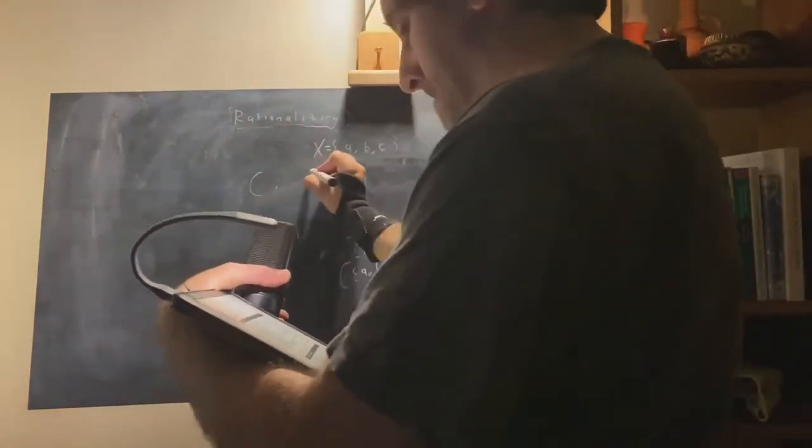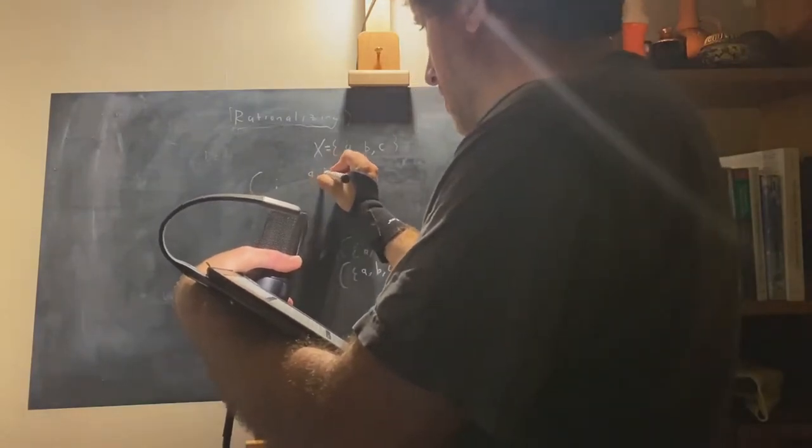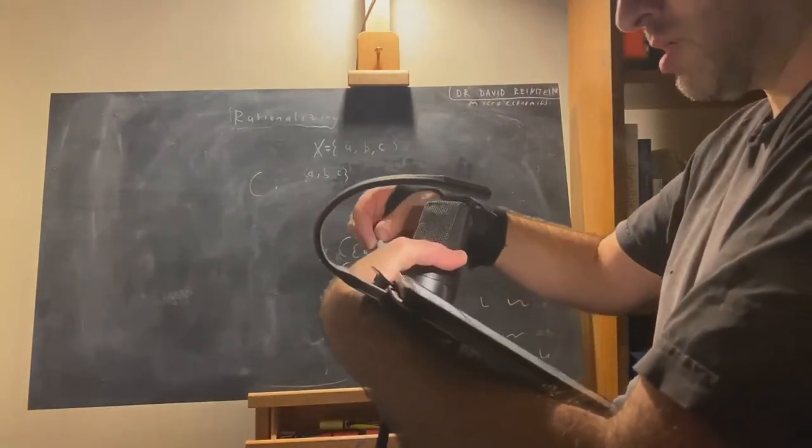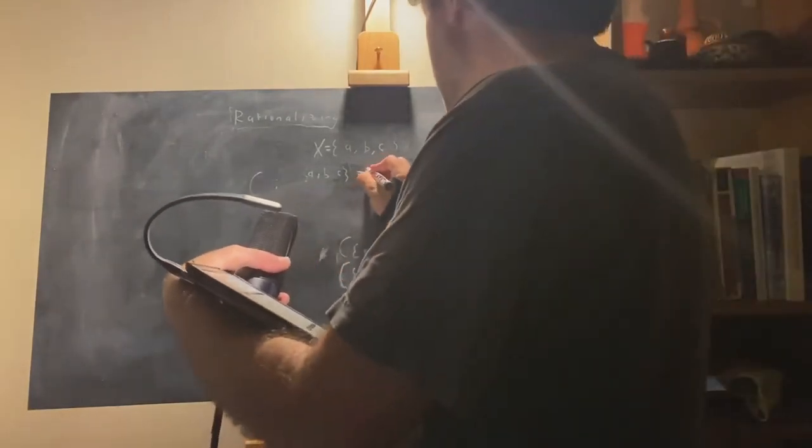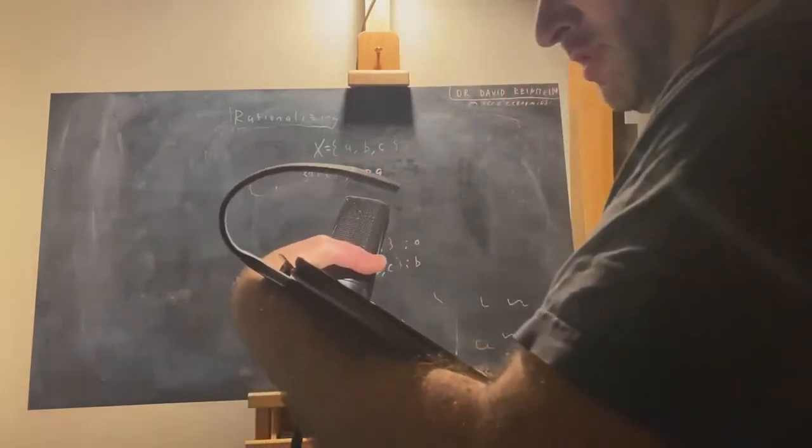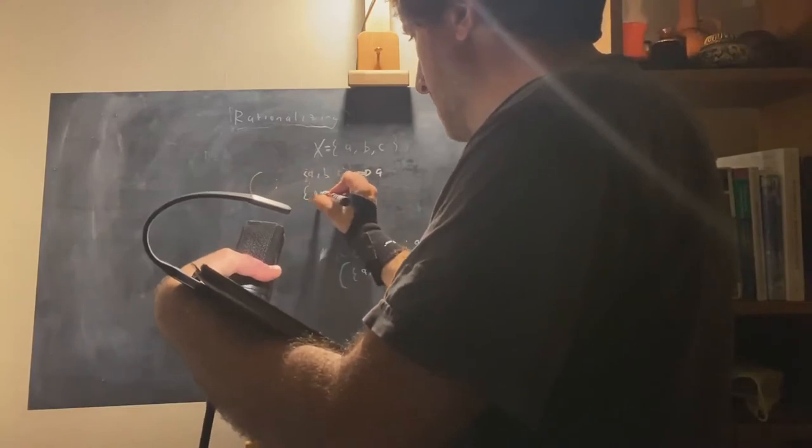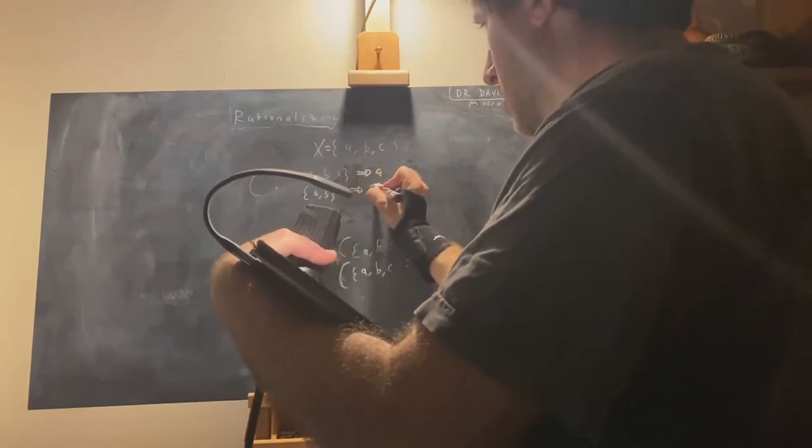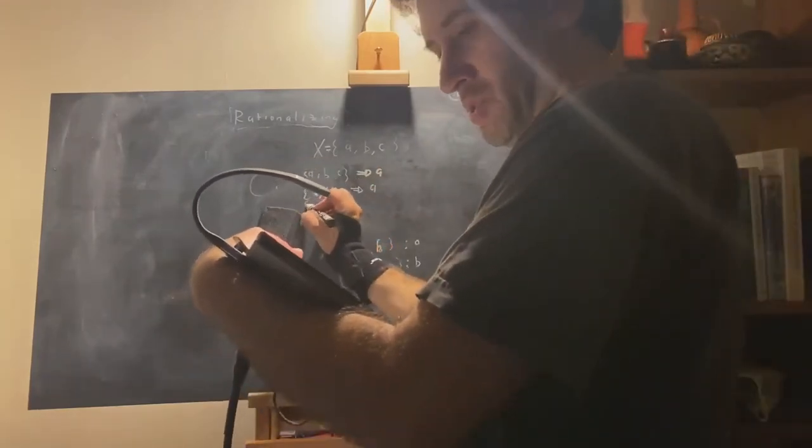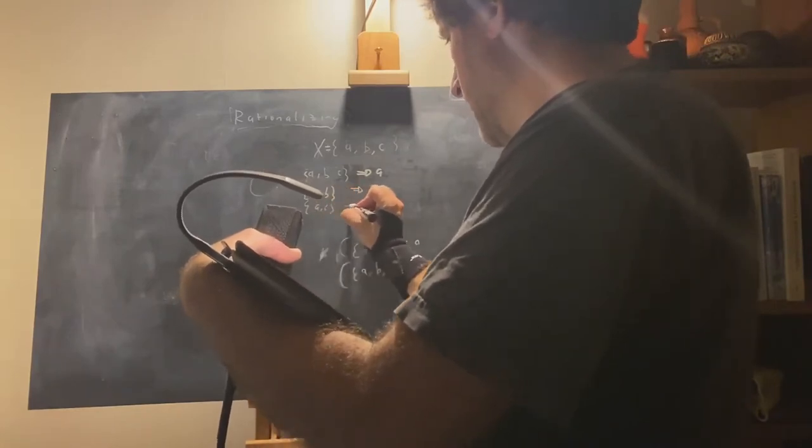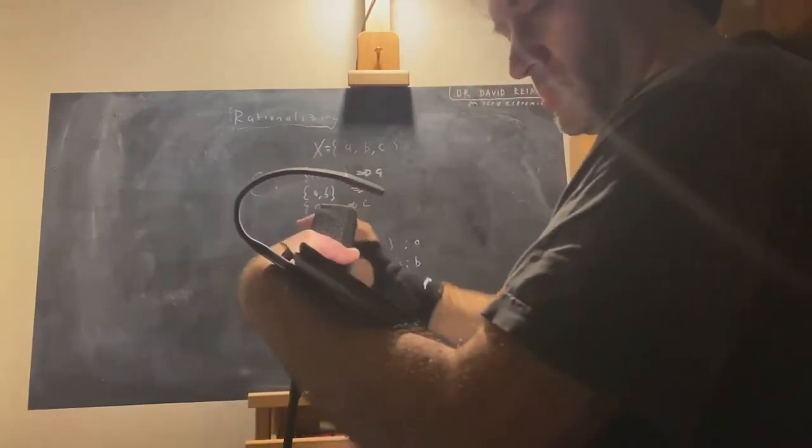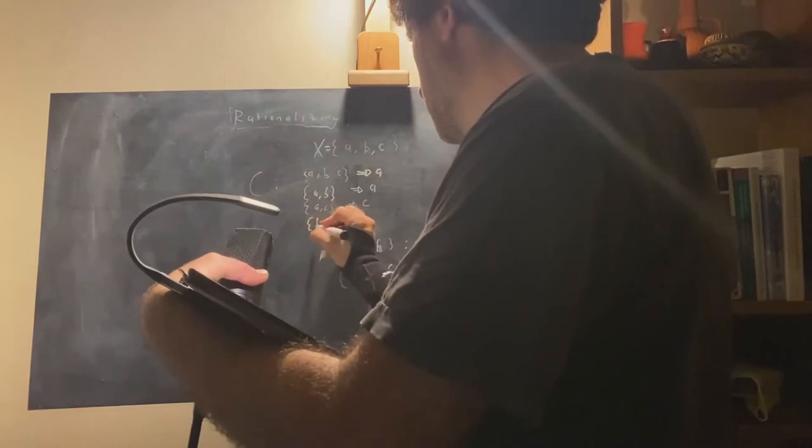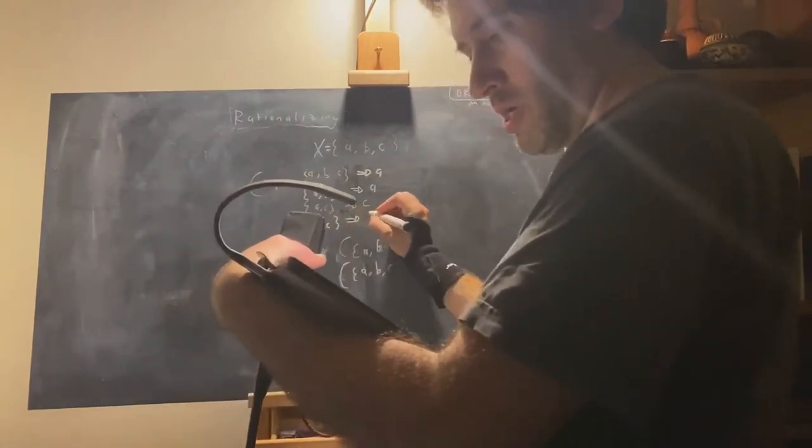Suppose we have some choice function that assigns choice from given options A, B, and C. I choose A. If I'm given options A and B, I also choose A. If I'm given options A and C, I also choose A. And if I'm given options B and C, I choose B.